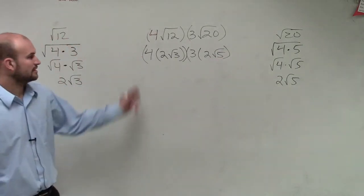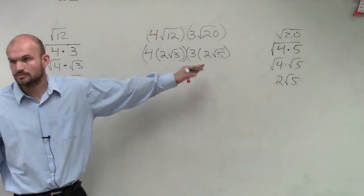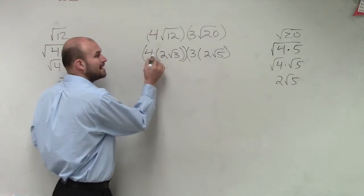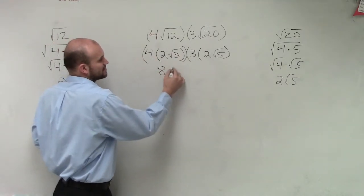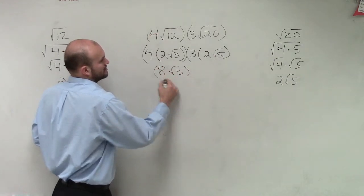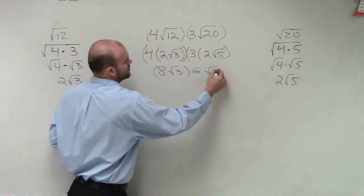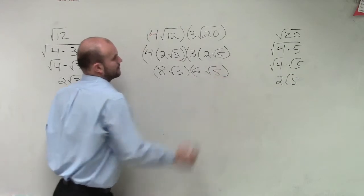Okay, then we can multiply these through. So remember, you cannot multiply a number inside the radical. So therefore, I'm going to have 8 square root of 3 times 6 square root of 5.